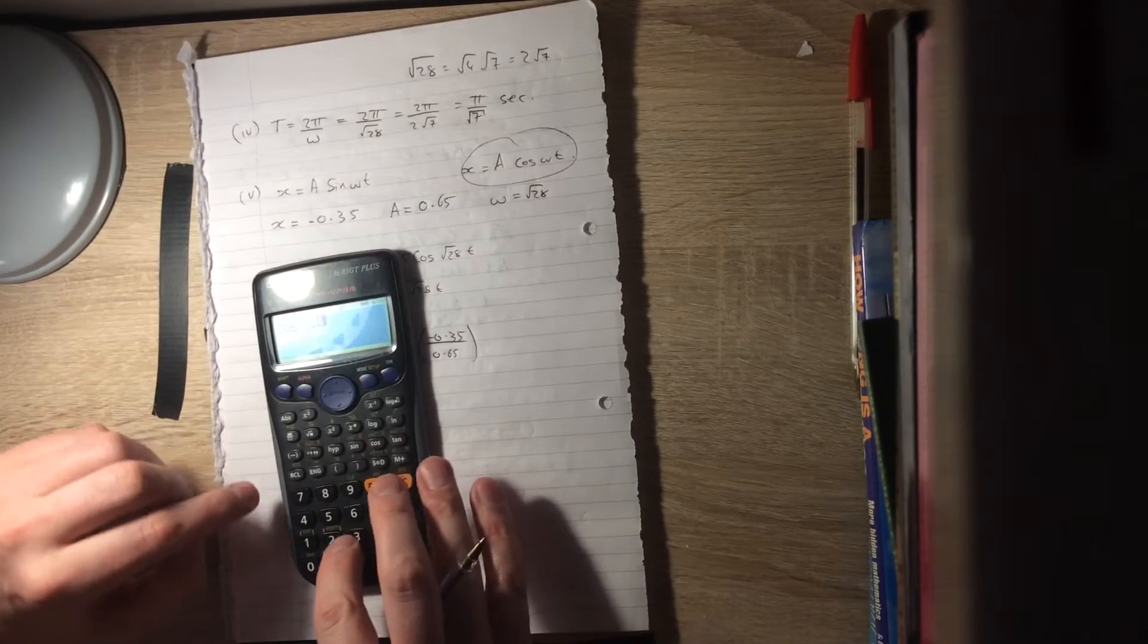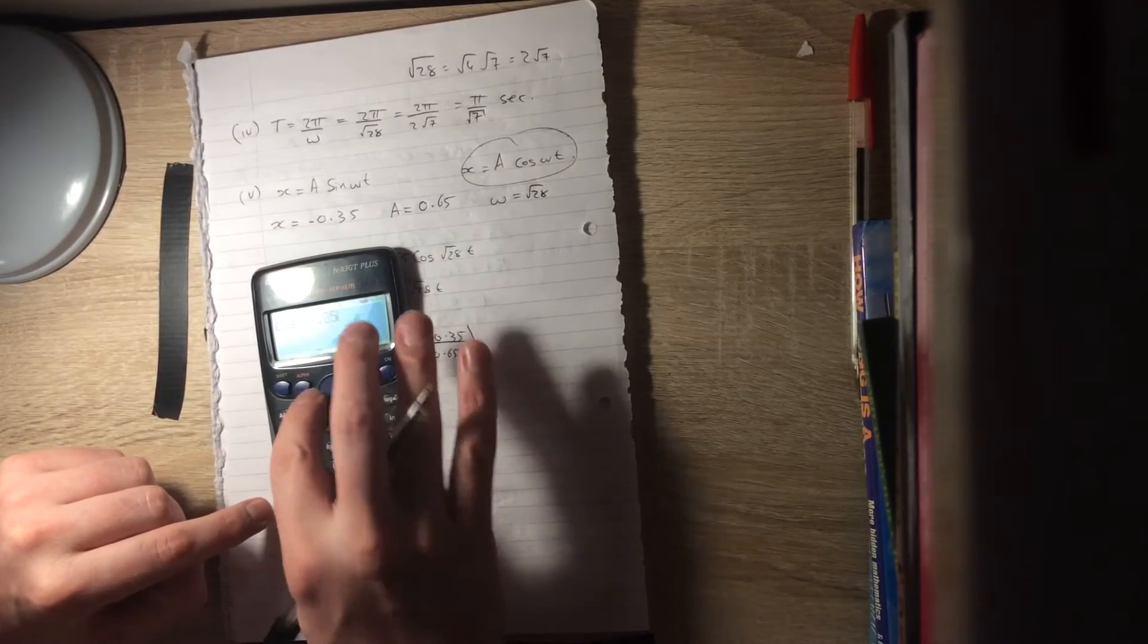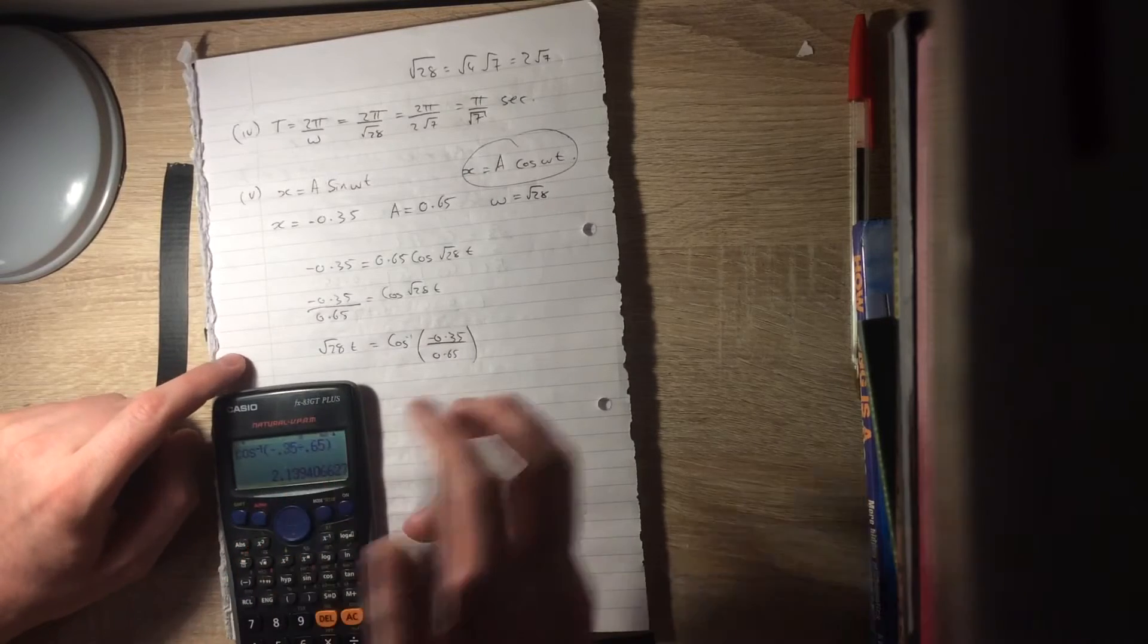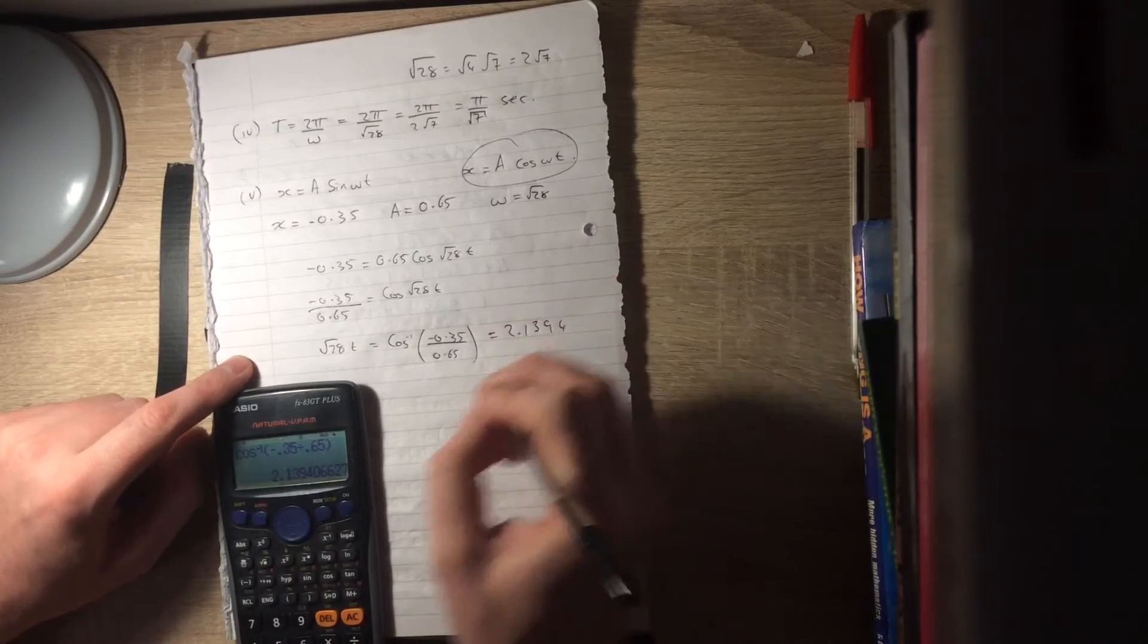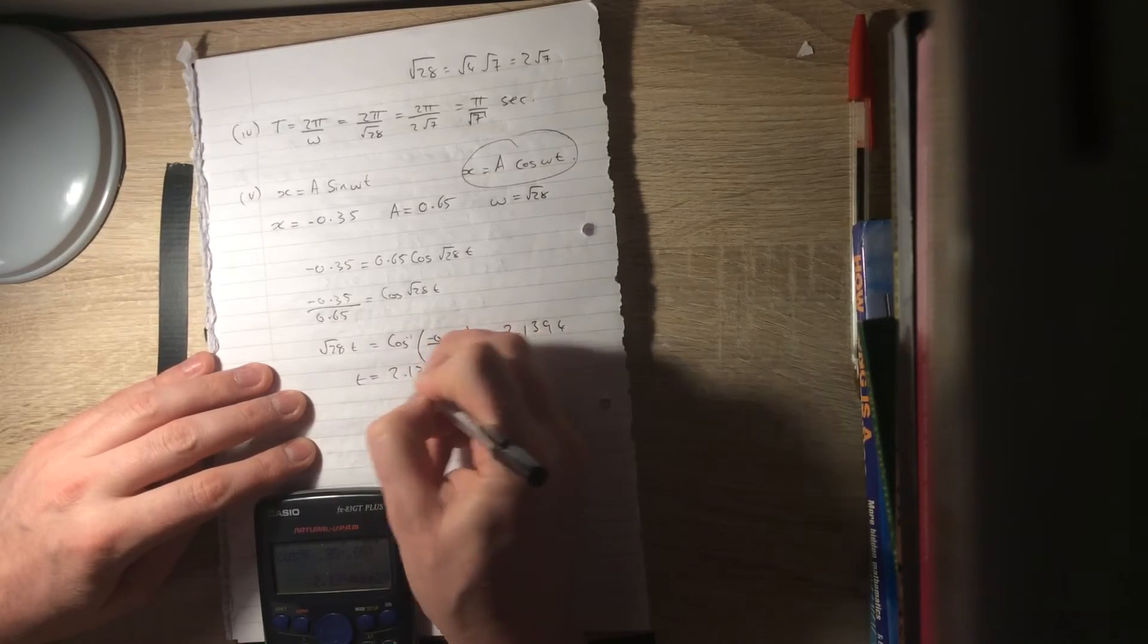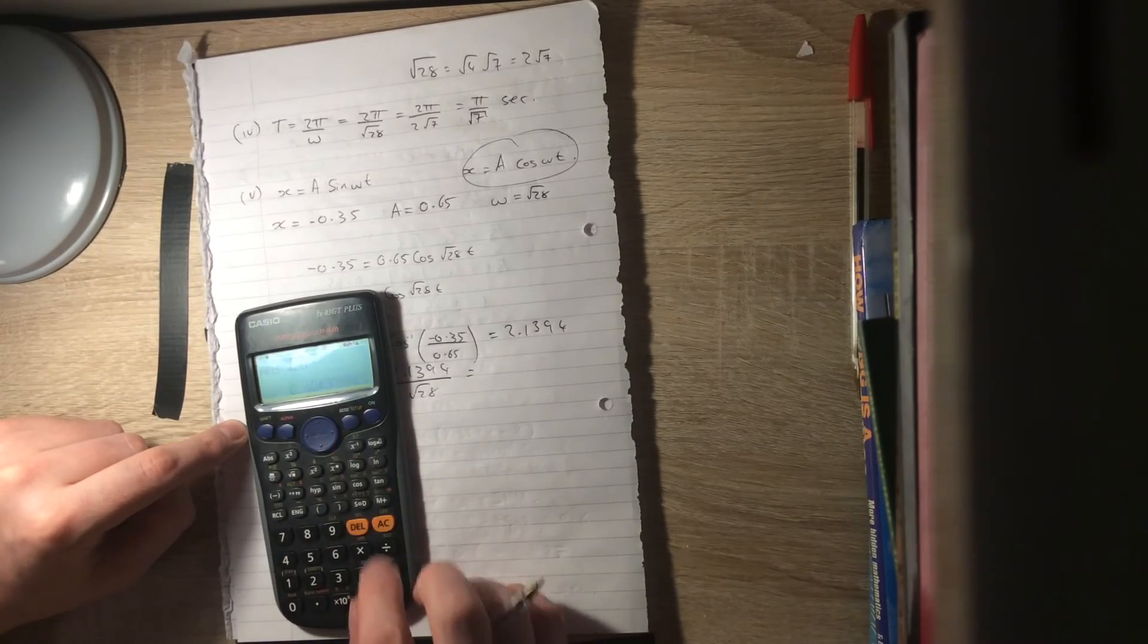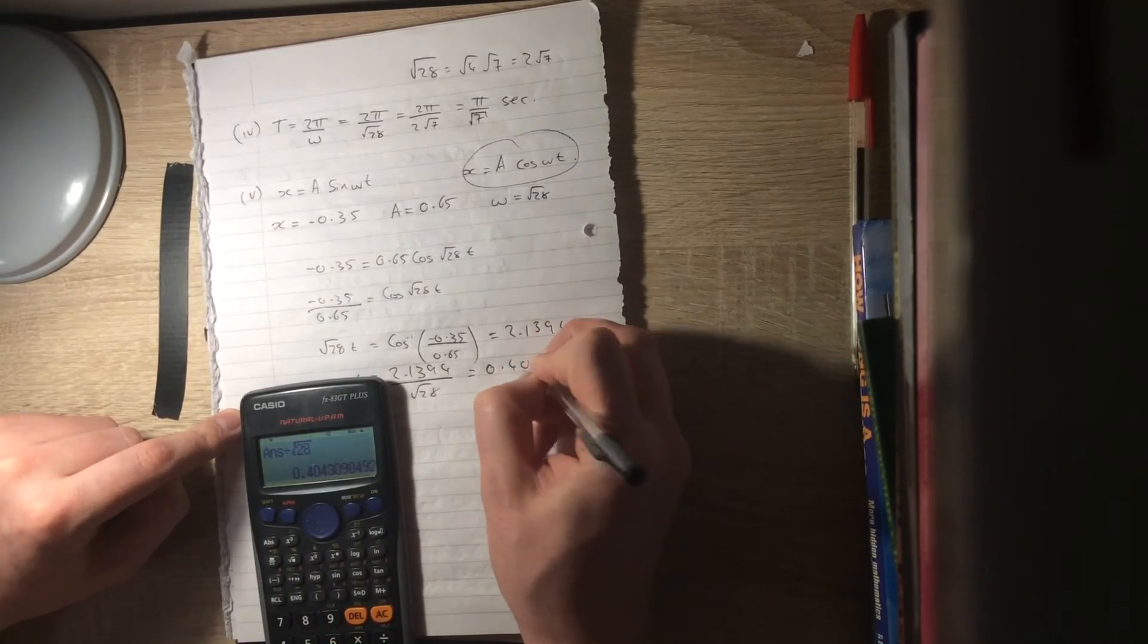The calculator is going to give me a positive answer, so let's stick with that. That's 2.1394. And our time when it happens is 2.1394 divided by root 28. So divide that by root 28, and we are going to get ourselves 0.404 seconds.